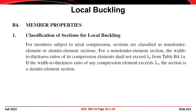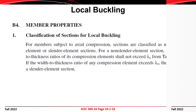Referring to Chapter B of the specification, members subjected to axial compression are classified as either non-slender element or slender element sections. We look up lambda sub r from Table B4.1 and compare our calculated lambda values to it. If lambda for the element is less than lambda sub r, the element is non-slender; if lambda is greater than lambda sub r, the element is classified as slender.